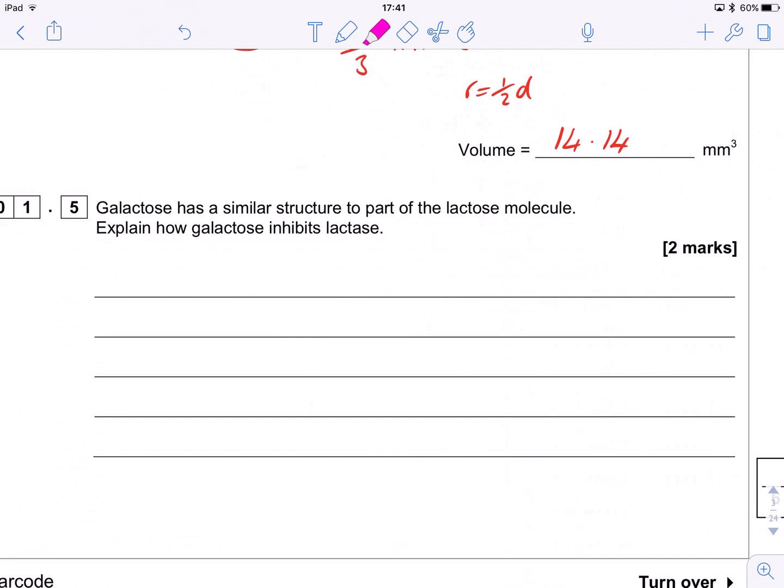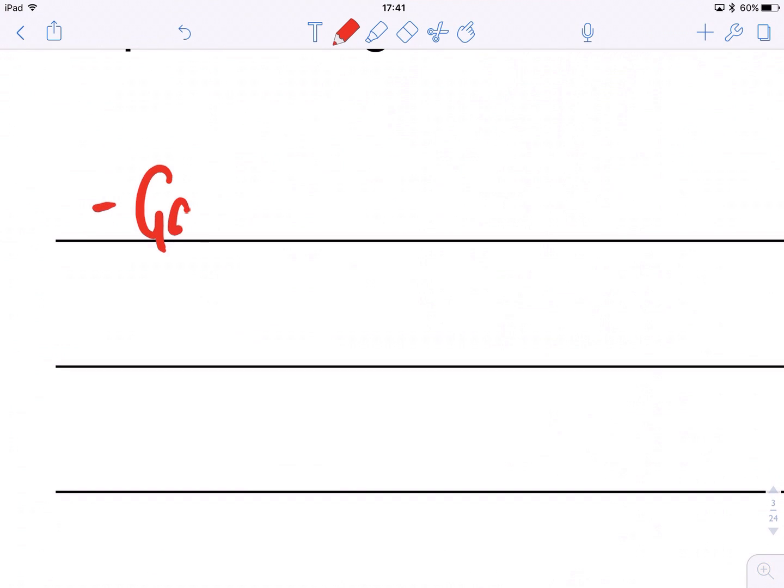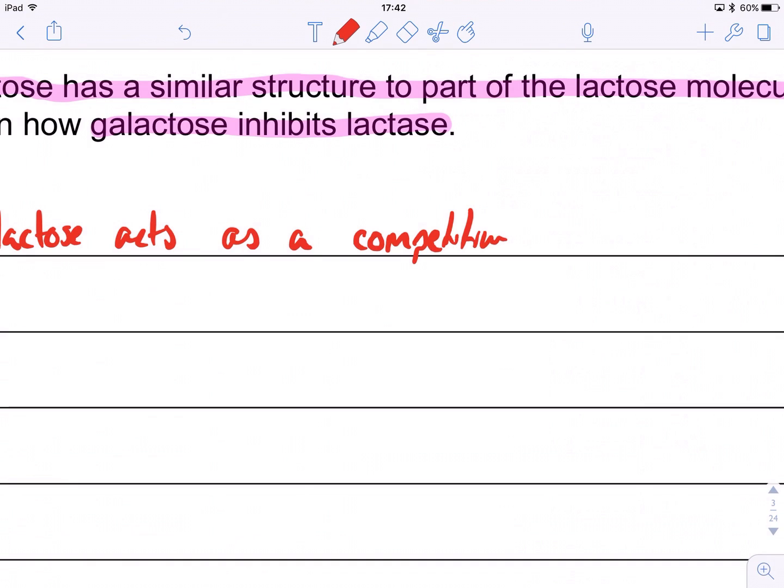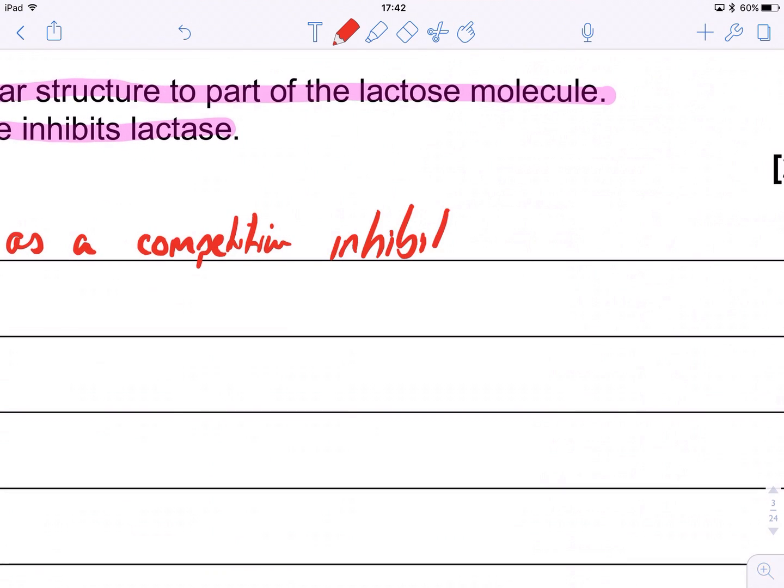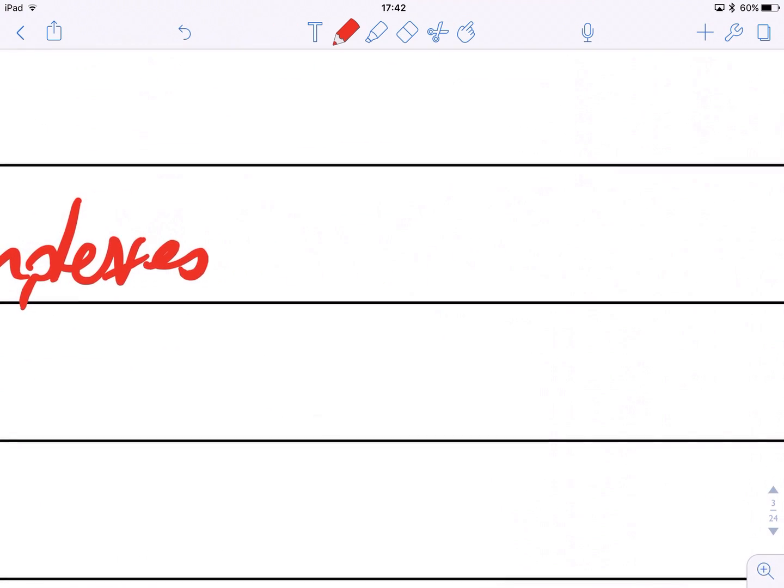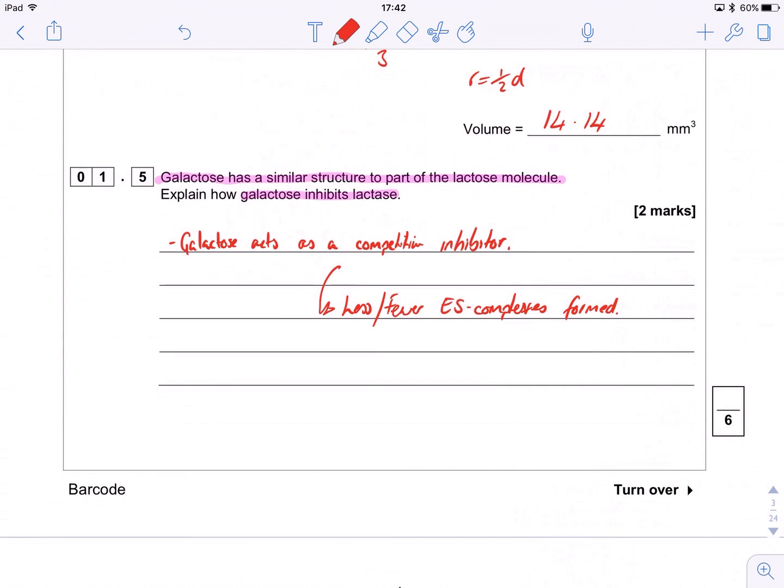So last little question on this one. We're saying that galactose had a similar structure to part of the lactose molecules. Explain how galactose inhibits lactase. So similar structure with enzymes. The first thing you should be thinking is competitive inhibitor. So that's the first thing we're going to say. We're going to bullet point this. We're going to say galactose acts as a competitive inhibitor. One mark. Nice. What does that mean? Well, we get less or fewer enzyme substrate complexes formed. And that gets our second mark. So this is actually a really nice opening question. We get six out of six for this. It's a lovely enzymes question. Definitely going to be something like this on the paper. So just watch out for it. Don't be scared by equations. Just make sure you know that radius is half of diameter, that sort of thing. And make sure you know your enzymes inside out because this is going to pop up over and over again at AS level and A level as well.